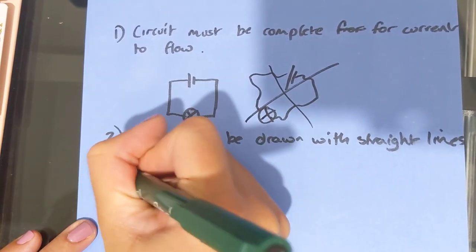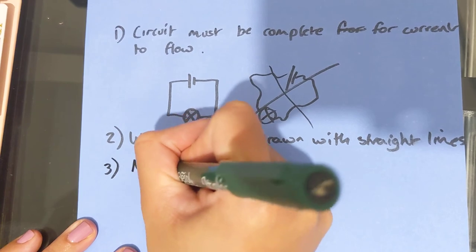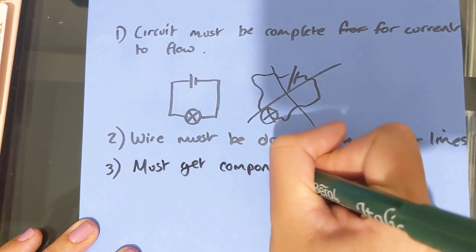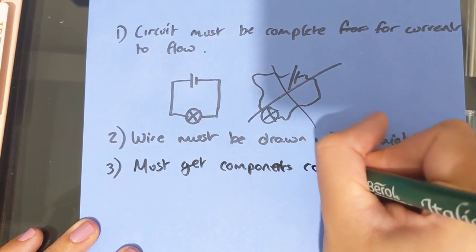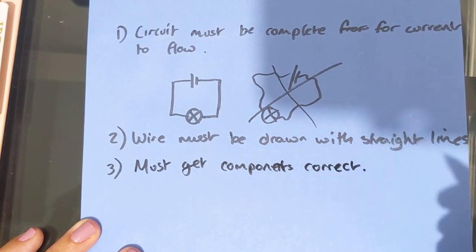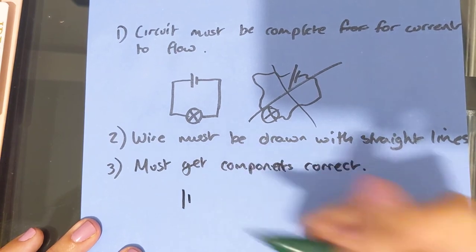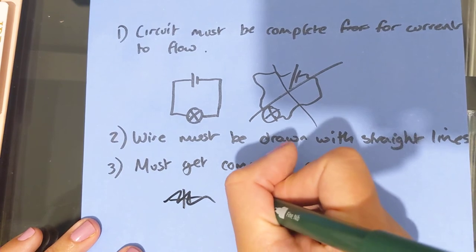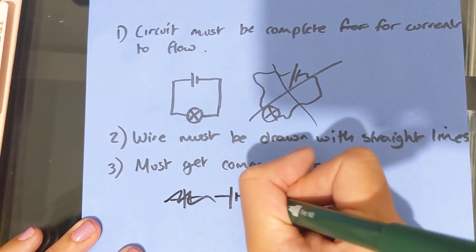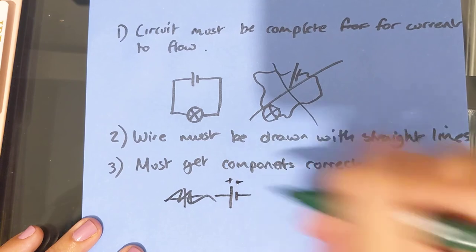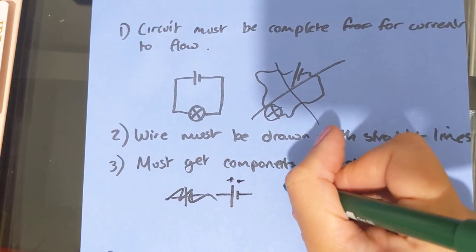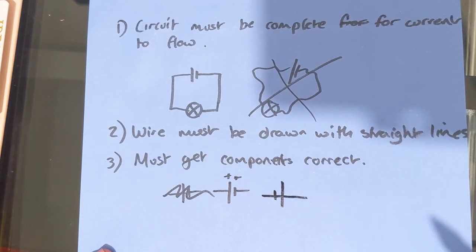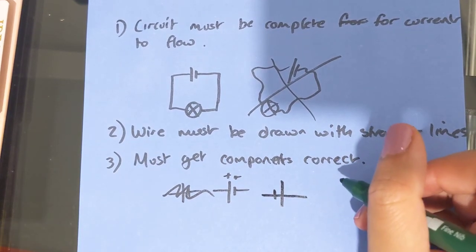Third is we must get our components correct. So what that means is that if you're going to draw a cell, it needs to be like this. Oh, that's wrong. So it needs to have the long line, the short line. It needs to not be joined in the middle. And it needs to have the positive and the minus. You can't just make up your own versions and hope for the best. So that would be wrong.